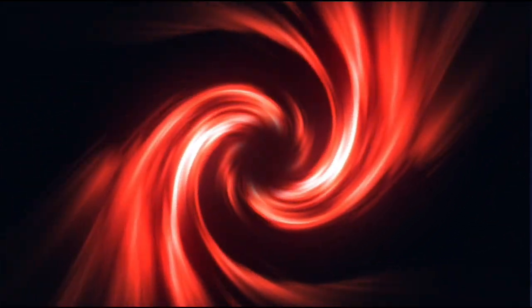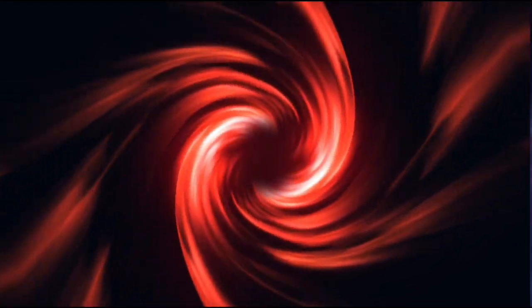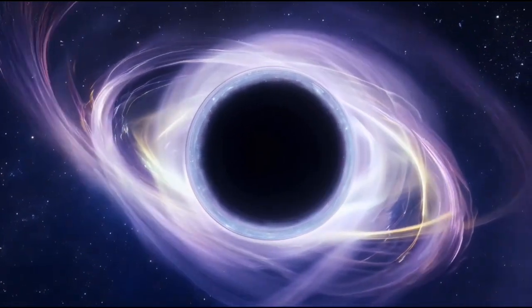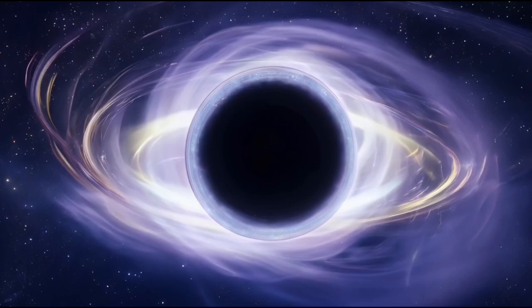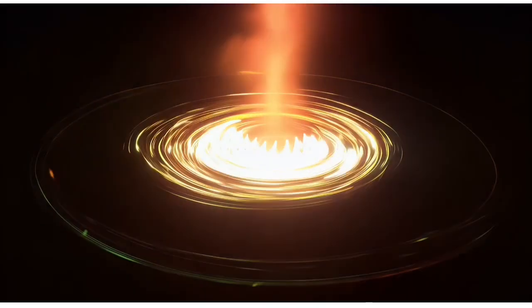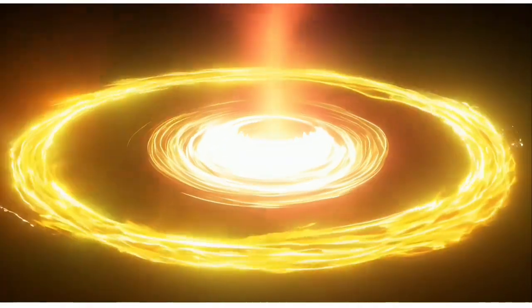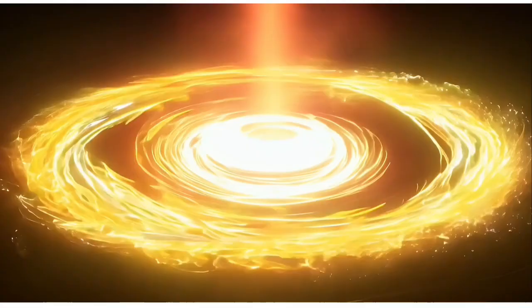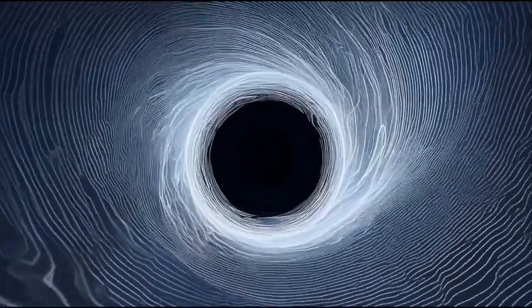Moving inward, the photon sphere constitutes the second layer, where light orbits the black hole in perpetual captivity. Any photons that venture into this realm succumb to the overwhelming gravitational pull, trapped forever within the black hole's cosmic embrace.